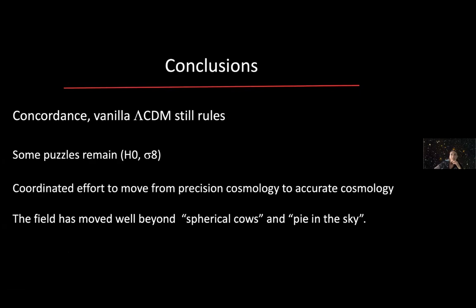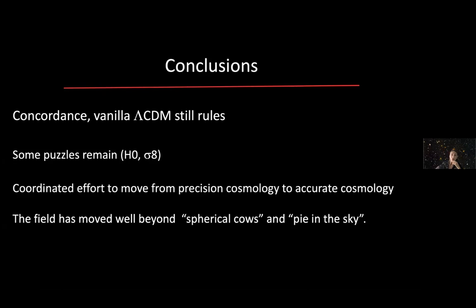Let me put up my conclusion. The concordance, vanilla Lambda CDM model still rules despite the avalanche of data. Some puzzles remain. I talked about the H0 puzzle. There is a much smaller puzzle about the amplitude of fluctuations today, the famous sigma-8, at the 2-sigma level. There is a coordinated effort to move from precision cosmology to accurate cosmology. The field has moved well beyond spherical cows and pie in the sky. Accuracy is the new precision. And being very careful about relying too much on the model.